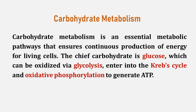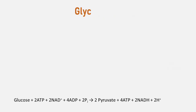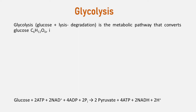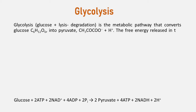Cells in the body take up the circulating glucose in response to insulin, and through a series of reactions called glycolysis, transfer some of the energy in glucose to ADP to form ATP. The last step in glycolysis produces the product pyruvate.